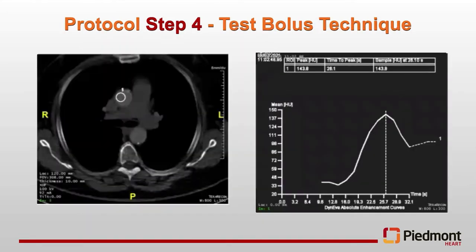Step four is one thing that's unique—not all institutions follow this. I prefer using the test bolus technique for scanning cardiac patients. This technique tests the IV for pressure limits, allows administration at higher contrast rates, and gives good contrast opacification because you know the peak at which you'll scan the patient. It also provides patient-specific delay time assessed using the patient's hemodynamics.